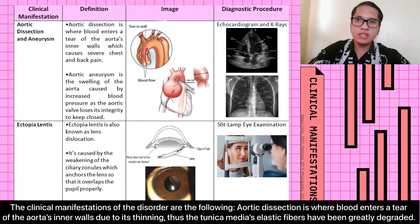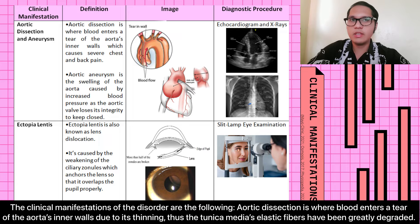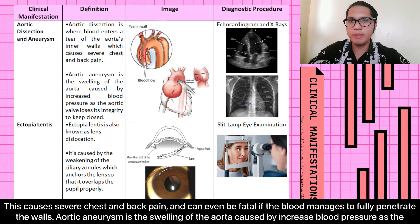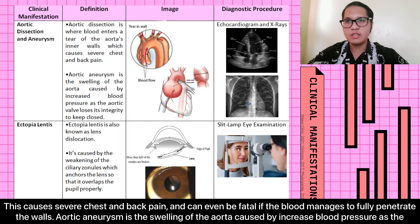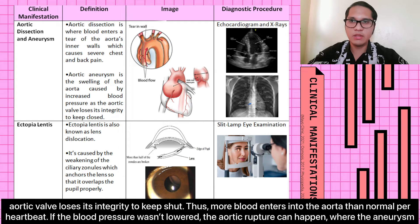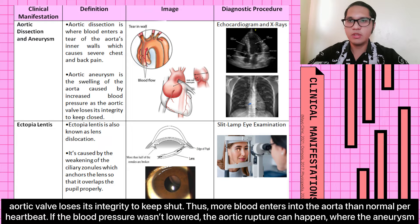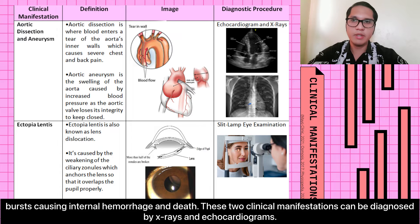Clinical manifestations of the disorder include the following. Aortic dissection is where blood enters a tear of the aorta's inner walls due to its thinning, since the tunica media's elastic fibers have been greatly degraded. This causes severe chest and back pains and can even be fatal if the blood manages to fully penetrate the walls. Aortic aneurysm is the swelling of the aorta caused by increased blood pressure as the aortic valve loses its integrity to keep shut, causing more blood to enter through the aorta than normal per heartbeat. If blood pressure is not lowered, aortic rupture can happen — the aneurysm bursts, causing internal hemorrhage and death.